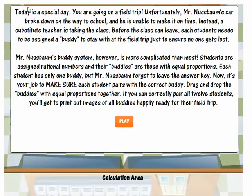Here's the backstory to the game. Today is a special day. You're going on a field trip. Unfortunately Mr. Nussbaum's car broke down on the way to school and he is unable to make it on time. Instead a substitute teacher is taking the class. Before the class can leave, each student needs to be assigned a buddy to stay with at the field trip just to ensure no one gets lost.